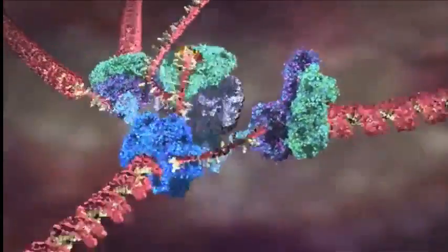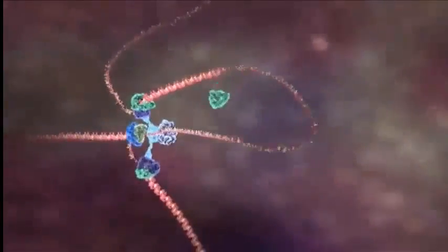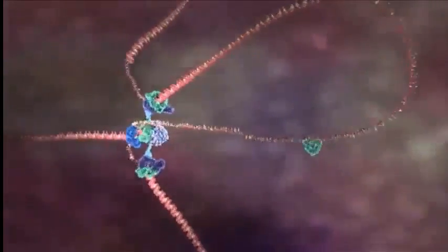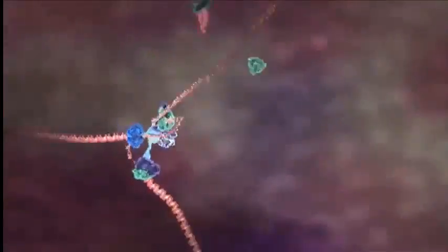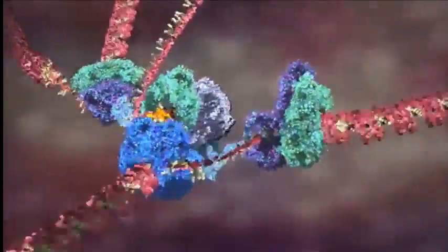One strand can be copied directly, and you can see it spooling off down to the bottom there. But things aren't so simple for the other strand because it must be copied backwards. So it's thrown out repeatedly in these loops and copied one section at a time, creating two new DNA molecules.